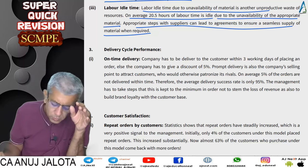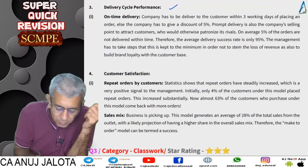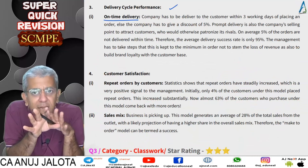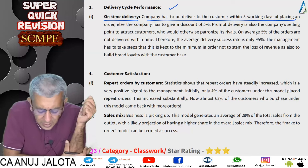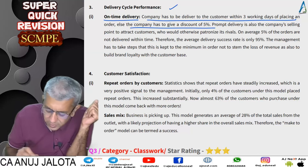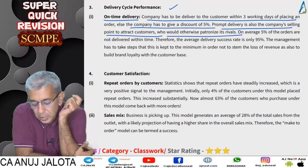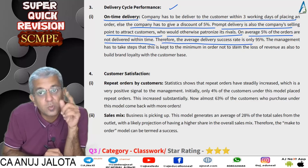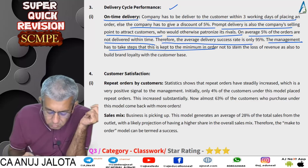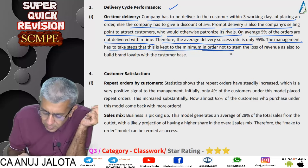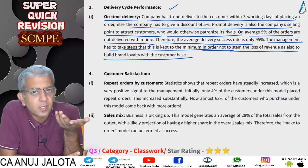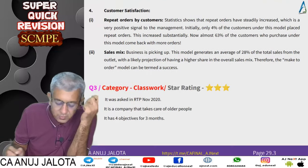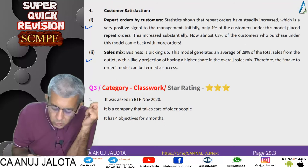Regarding delivery cycle performance: there is no clear improving trend. The company must deliver within three days, else it gives a 5% discount. Prompt delivery is also a competitive selling point to attract customers who would otherwise go to rivals. On average, 5% of orders are not delivered on time, meaning the delivery success rate is only 95%. Management must take steps to minimize late deliveries to protect revenue and build brand loyalty.